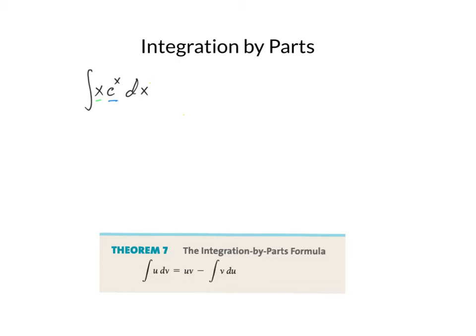Now, in this specific case, we have x times e to the x. And looking at the standard integration by parts relationship, udv, we have one part that represents u and one part that represents dv.